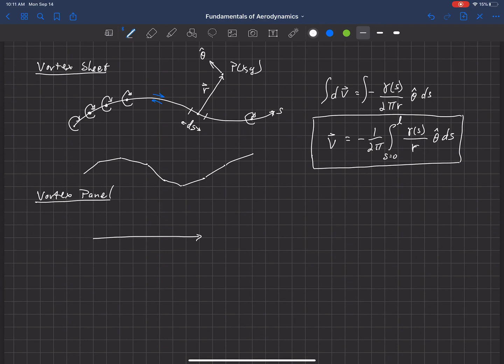We'll say that it's lying on the x-axis, so that's going to be a panel that has a continuous distribution of these line vortices. We've got x and y and we want to look at the influence of that vortex panel on some point P(x,y).